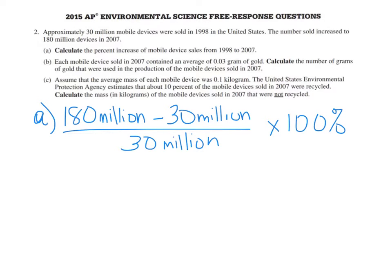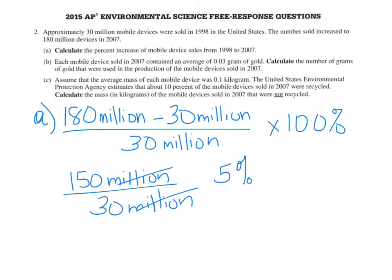If I subtract, I get 150 million divided by 30 million. My millions are going to cancel out, so I just have 150 divided by 30. You might be able to solve that in your brain and say that's 5. But that would not be correct because remember, you have to multiply by 100 to get the percent. So this is 5 times 100, which gives you a 500% increase.